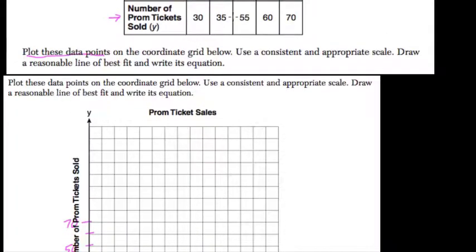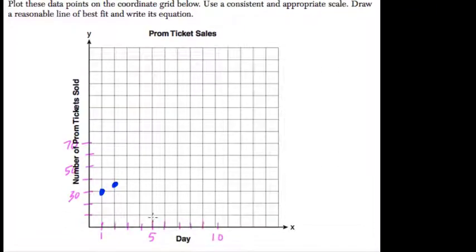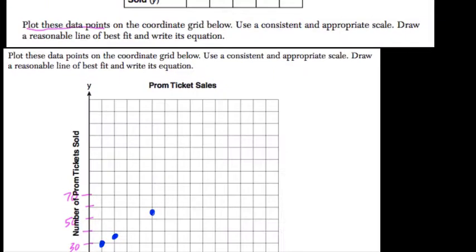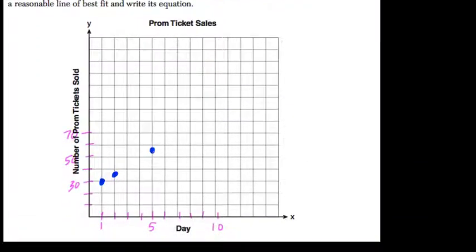Day 5 is next at 55. There are no tickets sold on days 3 and 4. Day 5 is at 55, about here. Day 7 is at 60, and day 10 is at 70.